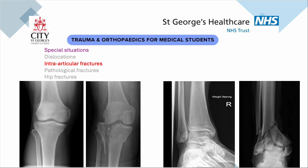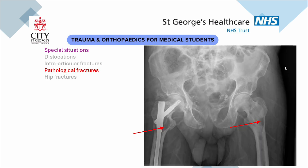Pathological fractures are typically the lytic ones. These come as metastases or something like myeloma. You see these lytic lesions and they weaken the bone. They can be solitary or multiple, as you see here — both of these femurs have got lytic lesions.